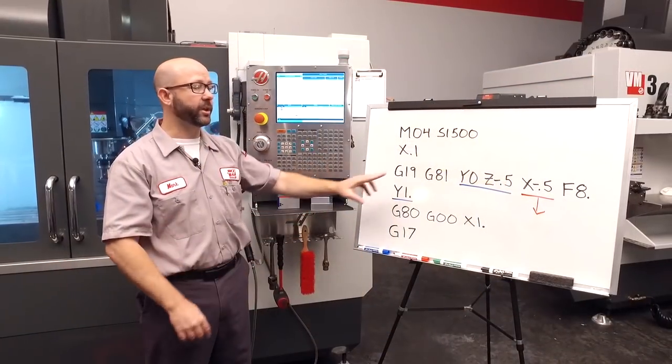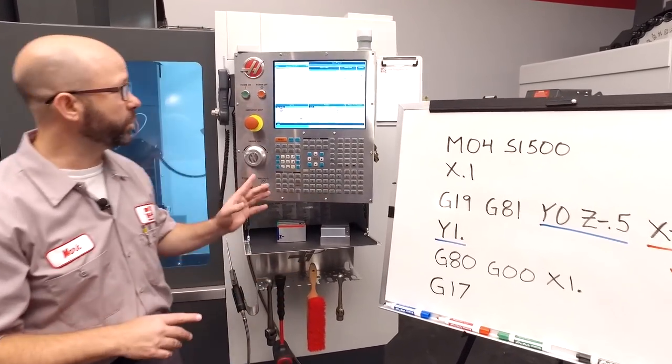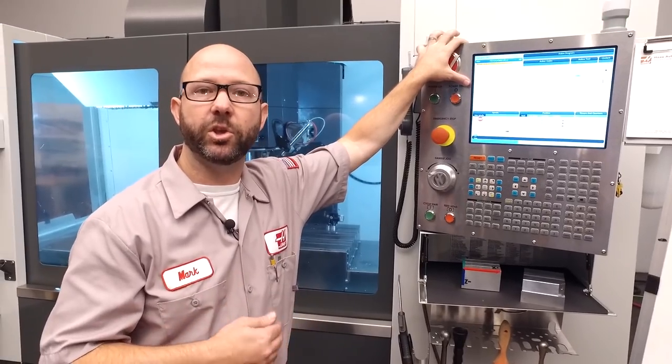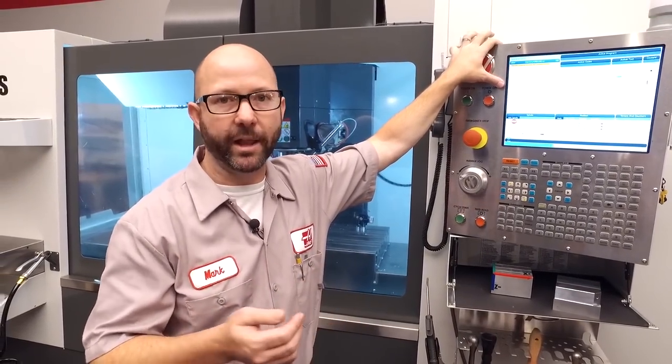Now, on the board, I used a simple G81 drilling cycle to keep things easy. On my real part, I used a G83 with a Q-PEC value. You can use that cycle as well with your right-angled head.